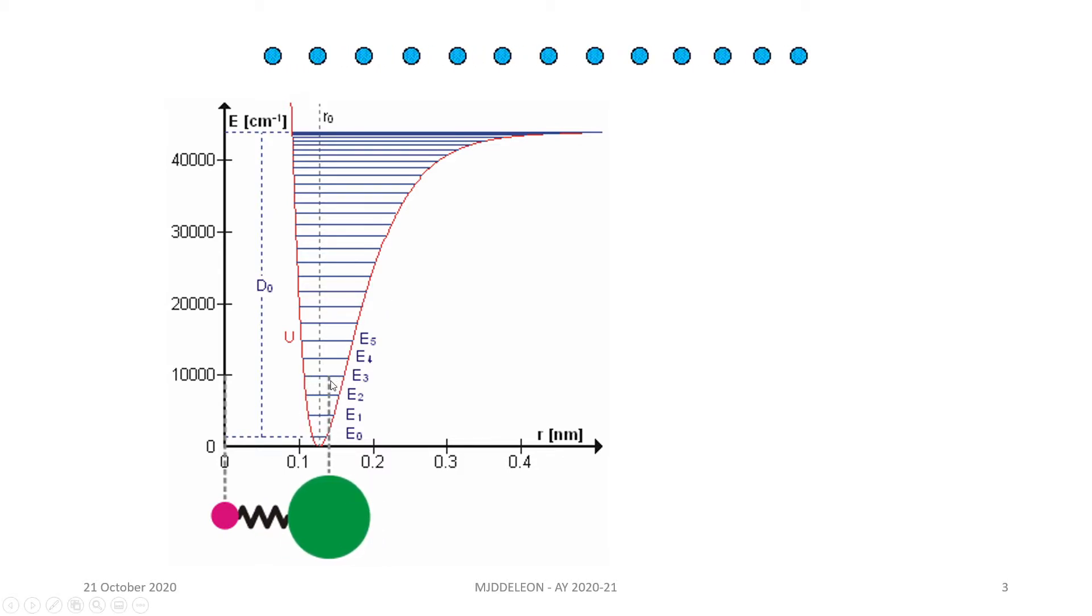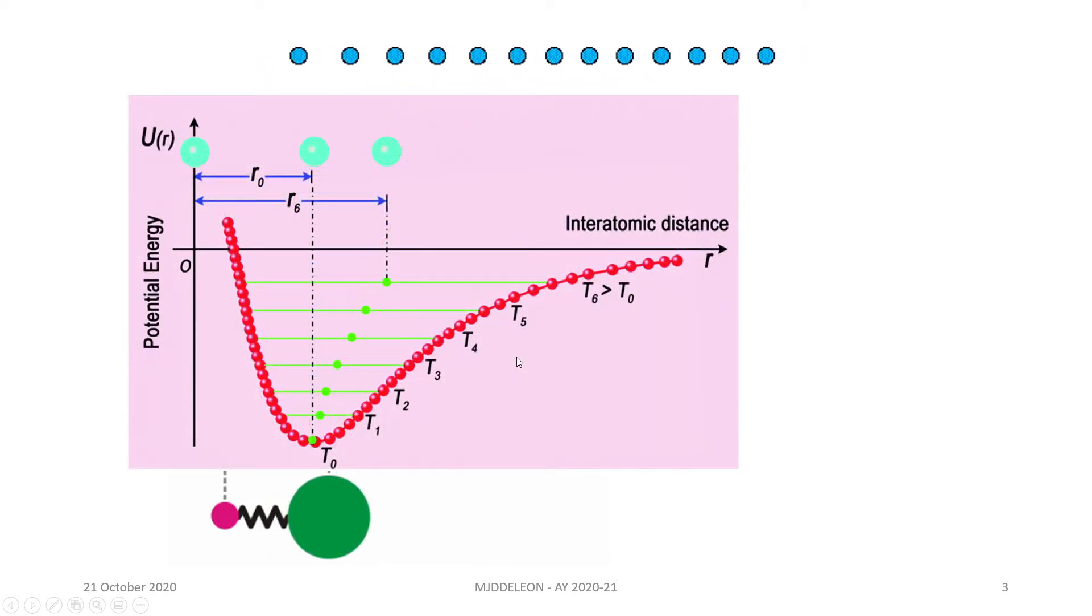By taking the average of this vibration or this oscillation in the lattice position, we can get the bond length of our atoms for that specific temperature as shown here. So this is the average interatomic distance for our bond.